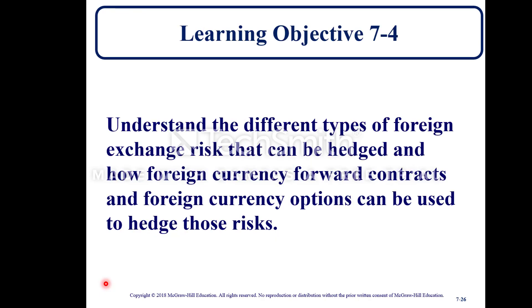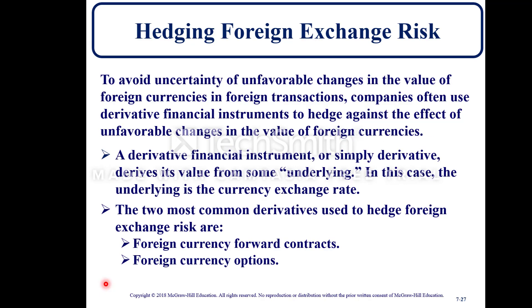Learning Objective 7-4: understand the different types of foreign exchange risk that can be hedged and how foreign currency forward contracts and options can be used to hedge those risks. To avoid uncertainty from unfavorable changes in foreign currency values, companies often use derivative financial instruments. A derivative derives its value from some underlying — in this case, the current exchange rate. The two most common derivatives used to hedge foreign exchange risk are foreign currency forward contracts and foreign currency options.